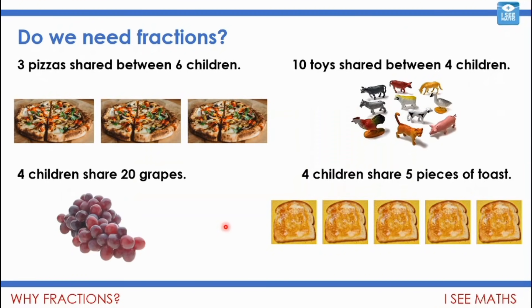Now, do we need fractions? So have a look at these examples here. There's four examples. Three pizzas shared between six children. Ten toys shared between four children. Four children share 20 grapes. And four children share five pieces of toast. So for which of those examples do we need fractions? For which wouldn't we use fractions? Now, again, if you want a bit of a challenge to extend yourself, see if you can work out how much each, how much per child. Pause the video and have a go at those four examples.